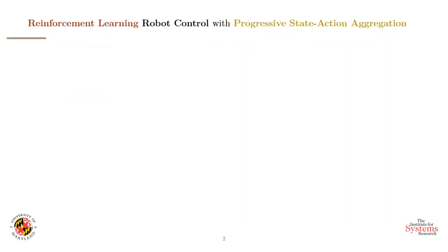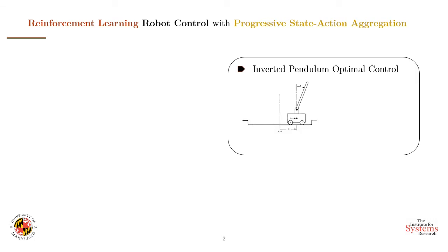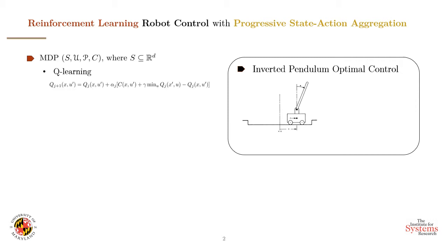We are interested in robot control applications. For example, imagine we have an inverted pendulum optimal control problem. The goal is to design an optimal control policy through data-driven direct adaptive methods. These methods are called reinforcement learning techniques. We can formulate this problem as a Markov decision process and use existing reinforcement learning algorithms to solve this problem.